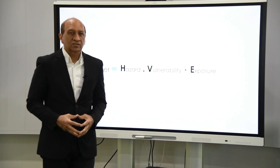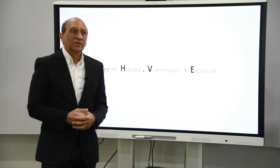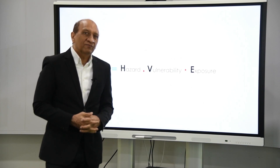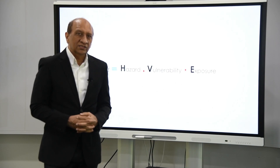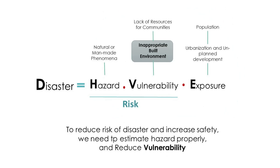This is related to disaster. We all read the news about disasters — earthquakes, floods, and so on. If you look at disaster, it's a product of three things: the hazard, which is a natural or man-made event; vulnerability, which is the weaknesses in the built environment being hit; and exposure, the people or property exposed to that event. If we have high exposure, high vulnerability, and a high level of hazard, disaster will be high.